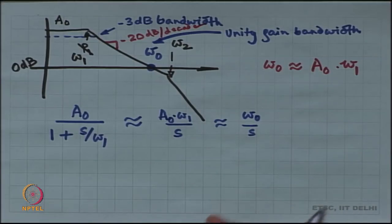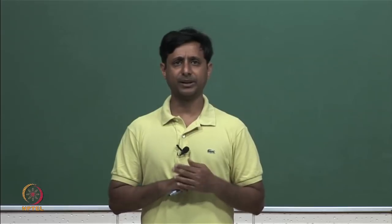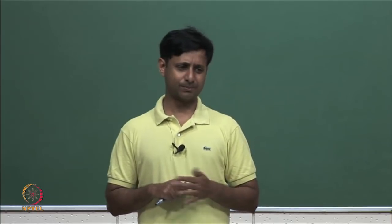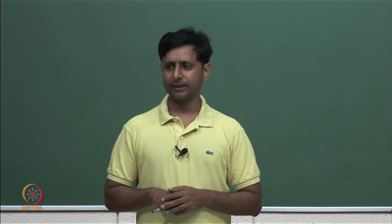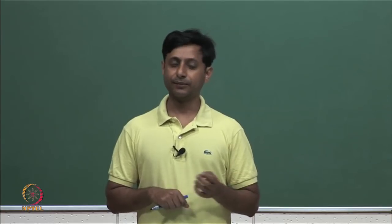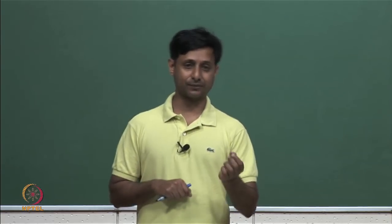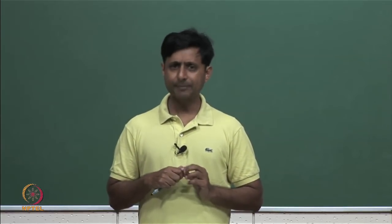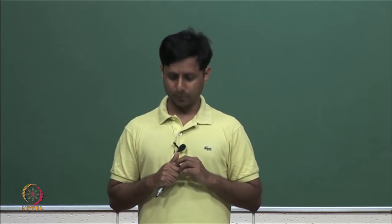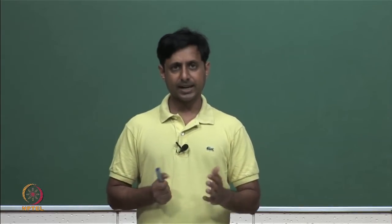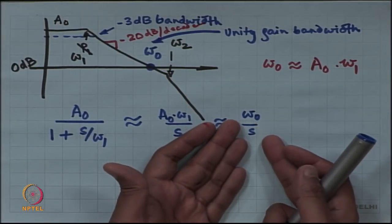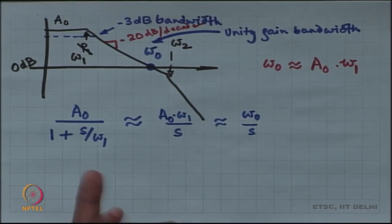The entire system can be simplified by virtue of the fact that the first pole is at a very low frequency. So whenever you are talking about any frequency, that frequency is going to be typically larger than the first pole. If you buy a commercial op-amp off the shelf, omega 1 is just a few hertz — 5 hertz, 10 hertz, something like that. So any reasonable frequency is going to be above omega 1, and therefore the amplifier can be expressed as nothing but omega naught by S, where omega naught is the unity gain bandwidth.